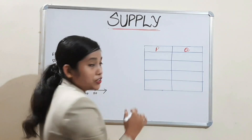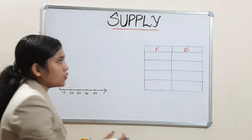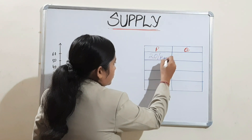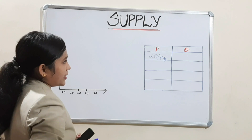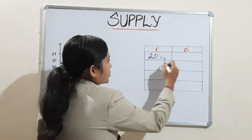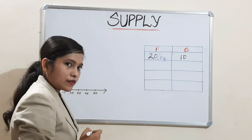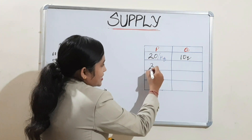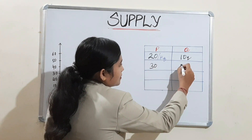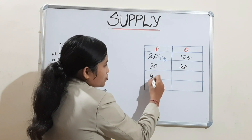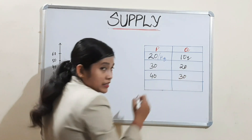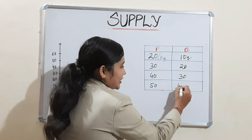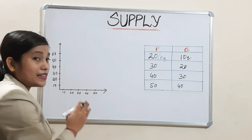Now we will look at the supply schedule and plot the supply curve. Suppose I am a rice farmer. When price is 20 rupees per kg, I supply 10 quintal of rice. When price increases to 30, I supply 20 quintal. When price increases to 40, I supply 30 quintal. When price increases to 50, I supply 40 quintal. Let's plot these points in a graph and see how the curve looks.